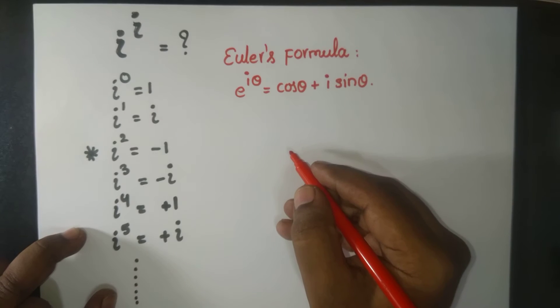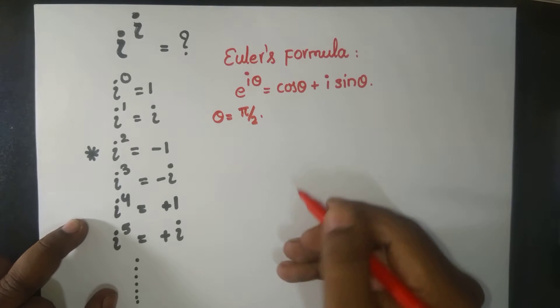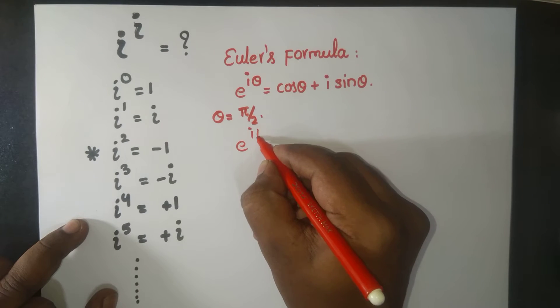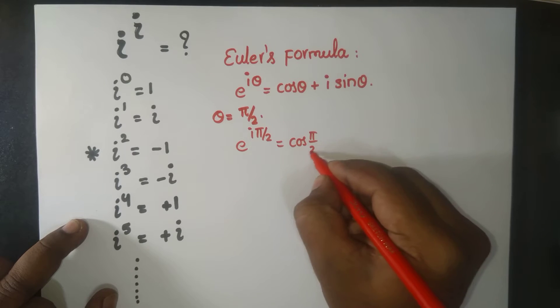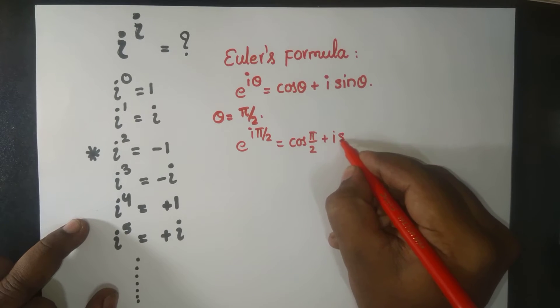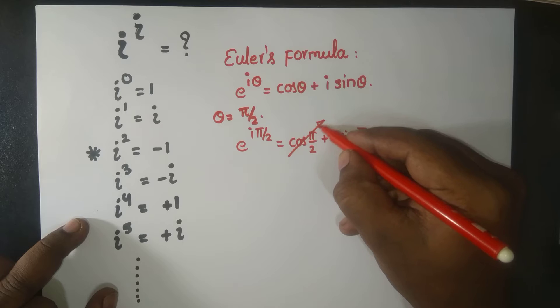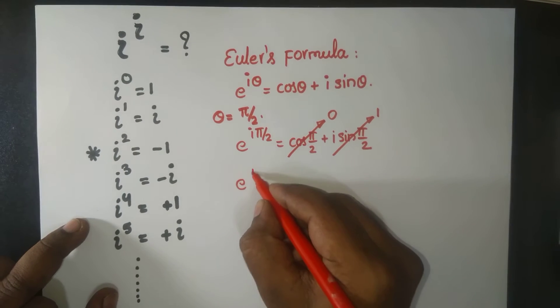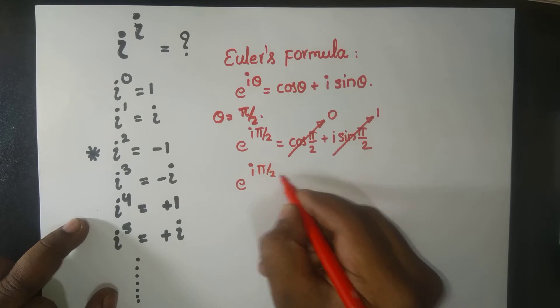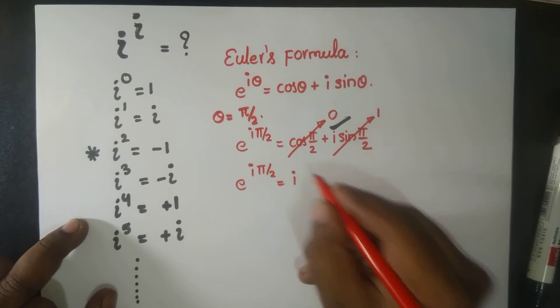All right, now slowly you plug in θ equal to π/2. So if I plug in θ equal to π/2, we get e^(i·π/2) is cosine π/2 plus i sine π/2. Now what is cos π/2? Cos π/2 is 0, and sine π/2 is 1. So therefore e^(i·π/2) is positive i.